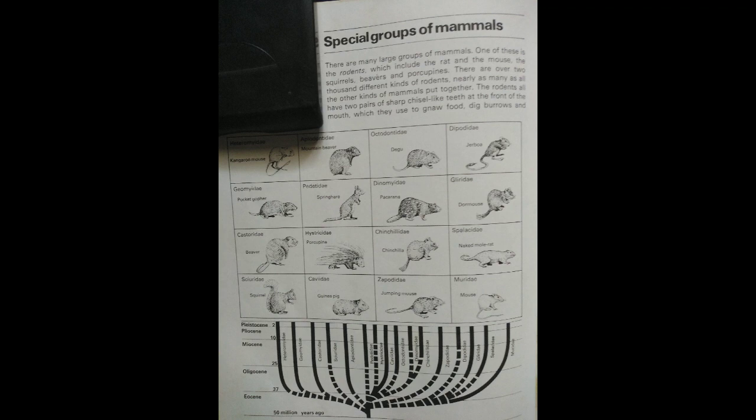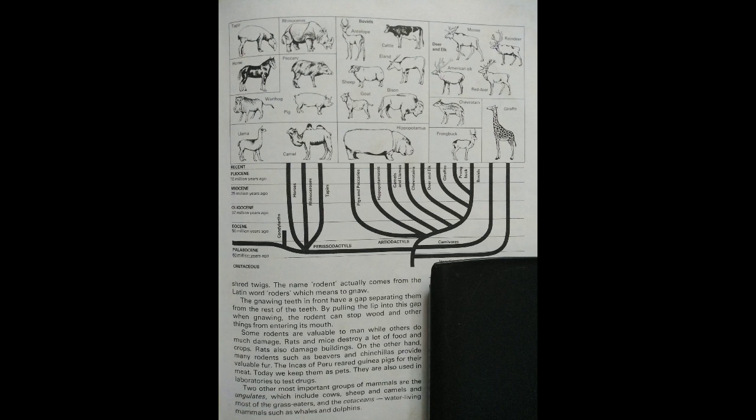The ungulates are a group of hooved animals that walk on the tips of their toes. They are divided into two groups: artiodactyls or even-toed ungulates, and perissodactyls or odd-toed ungulates. There are only three perissodactyl families, but the artiodactyls, which include cattle, deer, antelopes, and pigs, are a large group of eight families in total.